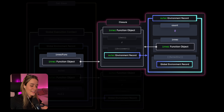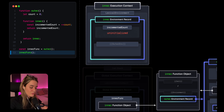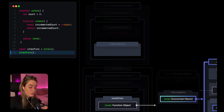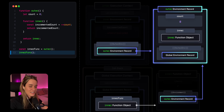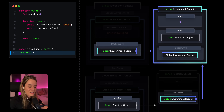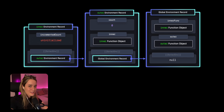The special thing about closures is that the environment record is from a function that has already finished executing and whose execution context has already been destroyed. So now let's see why this is actually useful. Whenever we invoke inner func, a new function execution context is created for inner as well as a new function environment record. Environment records have an internal property called outer env, or outer environment, and this holds the value of the environment property of the function object for which the environment record is created. The outer env property essentially creates a linked list, or chain — the scope chain of environment records.